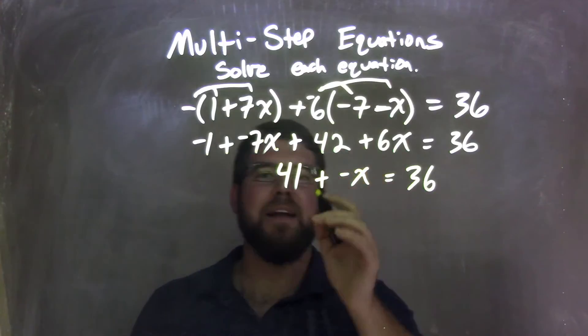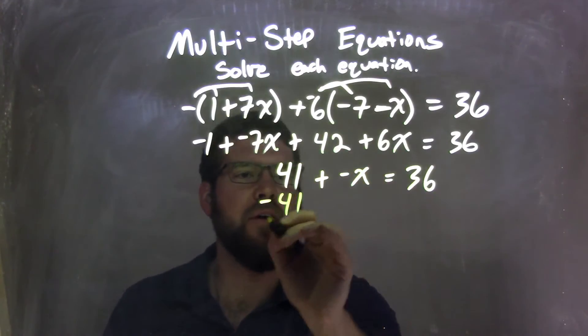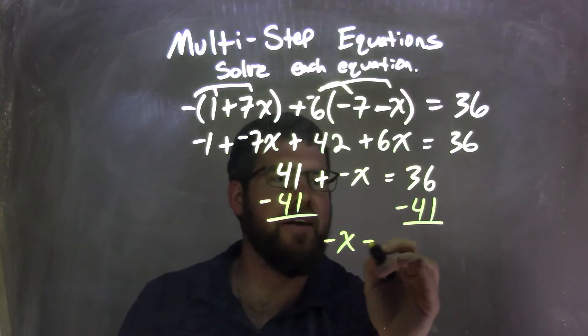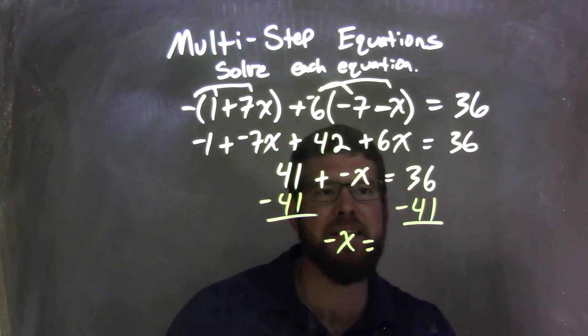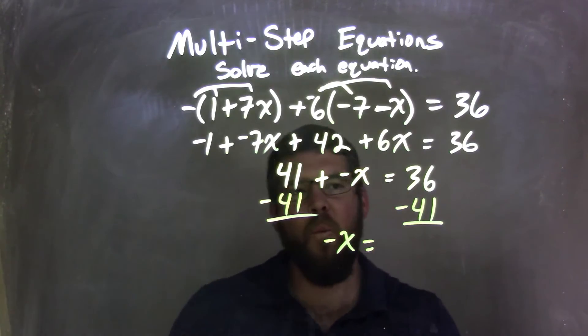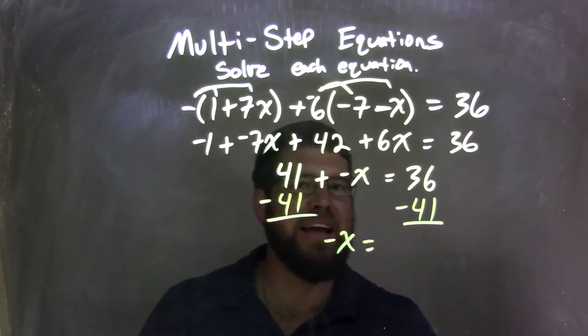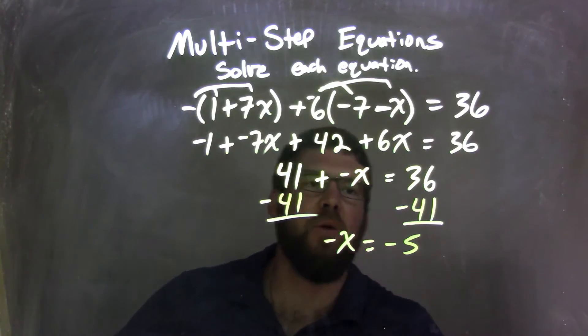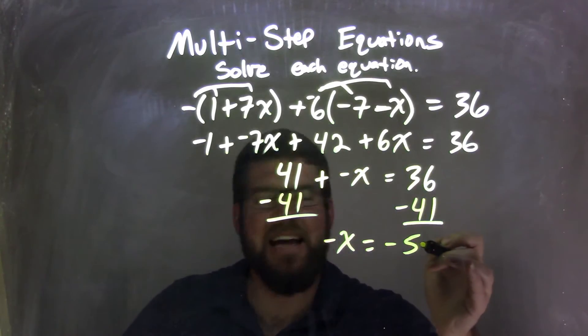Now I'm going to subtract 41 from both sides. Leave me with just a negative x out here. And 36 minus 41, what does that come out to be? Well, that's just a negative 5. So I have 36 minus 41 is a negative 5.